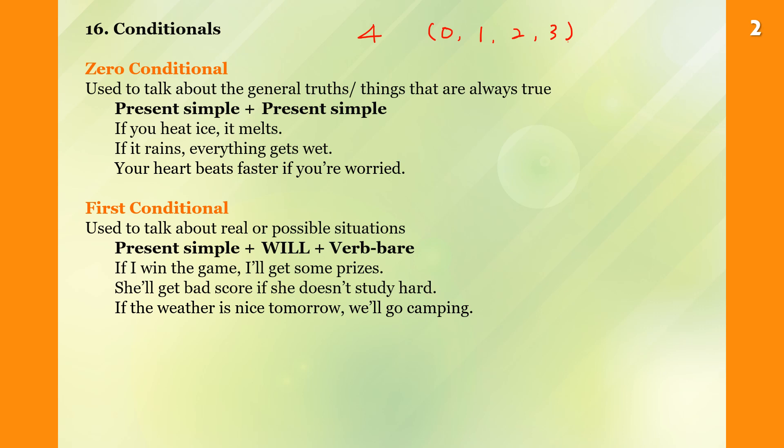Zero conditional is used to talk about the general truth or things that are always true. Present simple and present simple. If you hit ice, it melts. So this is present simple, present simple, and this is general truth. If you hit ice, it melts.